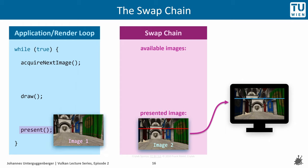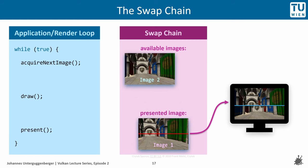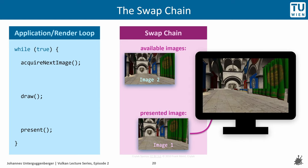Now let us assume that the application was really fast in rendering into image 1 and already sends it back to the SwapChain for presentation, while the contents of image 2 are still being transferred to the monitor. Presentation of image 2 is still not done, but another image to be presented arrives and is swapped out during that ongoing transfer. The transfer continues, but now the presentation engine takes data from image 1 and no longer from image 2. The image on the monitor does not look very nice — the artifact that has occurred here is called tearing. The top part was taken from image 2 and the bottom part from image 1.